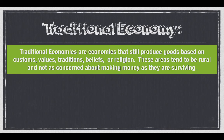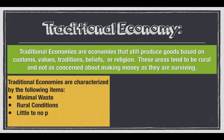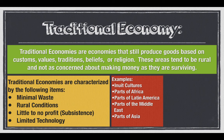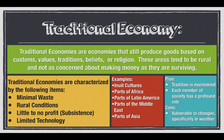The first of four types of economies is the traditional economy — they still produce things the old way. Characterized by minimum waste, rural conditions, little to no profit, and little technology. Examples include Inuit cultures, parts of Africa, Latin America, the Middle East, and Asia. The pros: tradition is maintained and each member of society has a profound role. The cons: they are vulnerable to changes, specifically changes in weather.